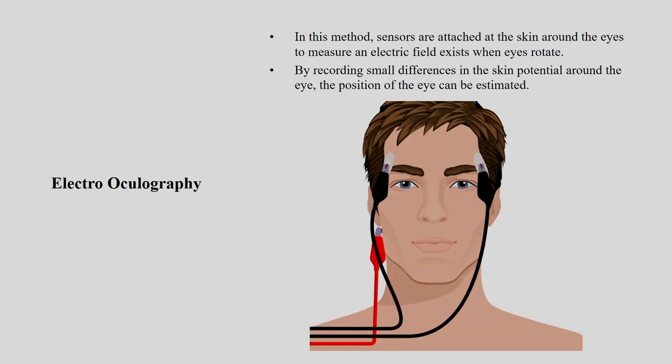What is electrooculography? Electro means you are going to understand the electrical responses. In this method, sensors are attached to the skin around the eyes to measure the electrical field that exists when your eye is rotating. By recording small differences in skin potential around the eye, the position of the eye can be estimated. This particular system needs to be studied in detail separately as it is out of scope for now.